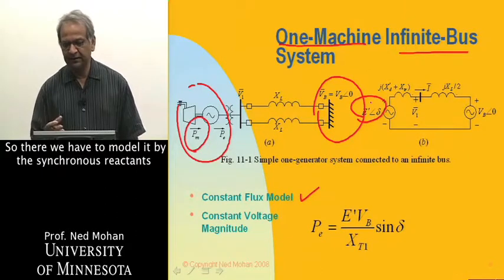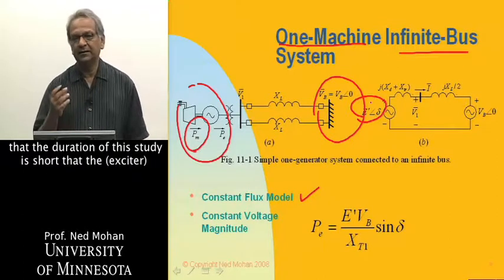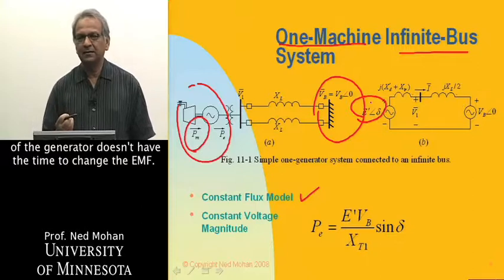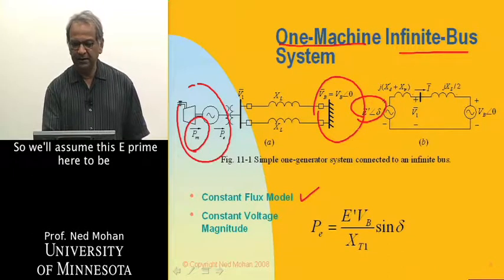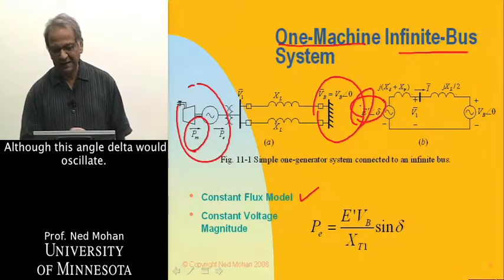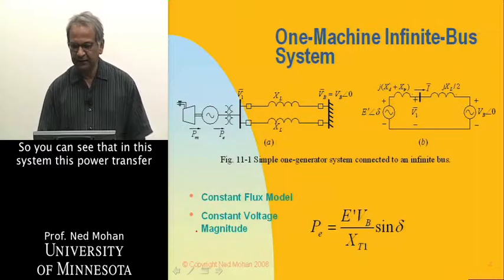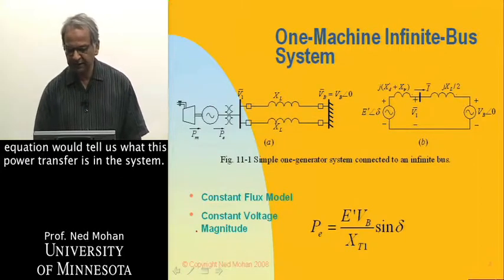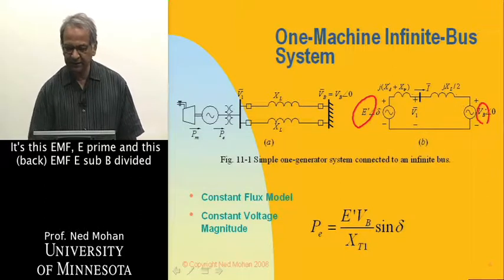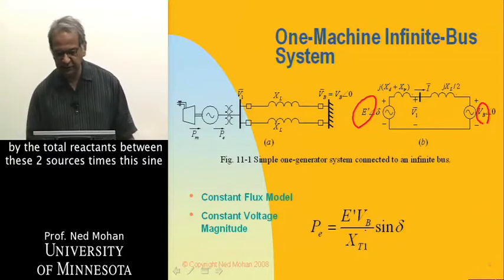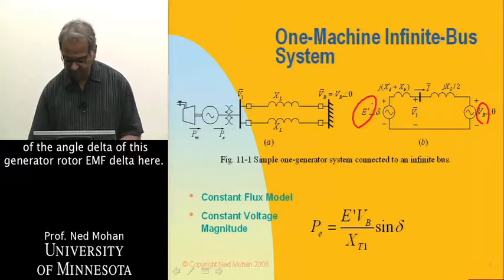The power transfer equation tells us the power transfer in this system: it is E' times V_B, divided by the total reactance between the two sources, times sine of the rotor angle delta. This gives us the power angle relationship for this one-machine infinite bus system.